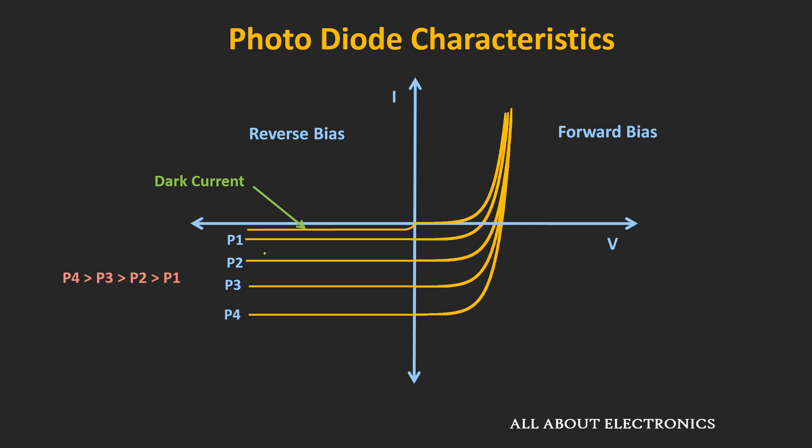In the reverse bias condition, if no light is falling on the photodiode, we will still get some current. In photodiode terminology, this current is known as the dark current. For any photodiode, this dark current should be as minimum as possible, because it will act as noise for the generated photocurrent.